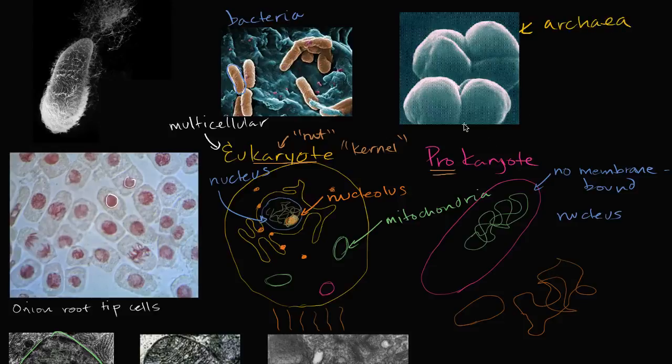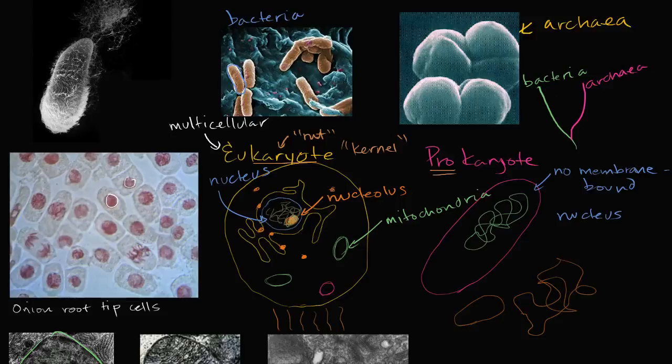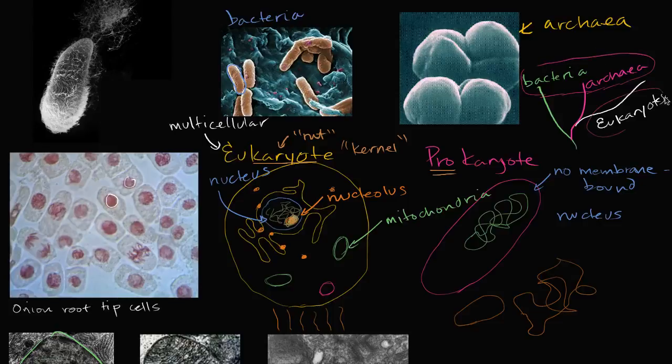And so when we think about the domains of life, the current thought is that you have bacteria here. You have archaea. And then you have eukaryotes. And these are things that have all the traits that we've talked about. And so these include plants, and animals, and fungi, and unicellular eukaryotes. Protists, and things like that. And so if we, once again, just high level, we would consider these prokaryotes. And these, of course, are the eukaryotes. So hopefully that gives you a good overview of things.